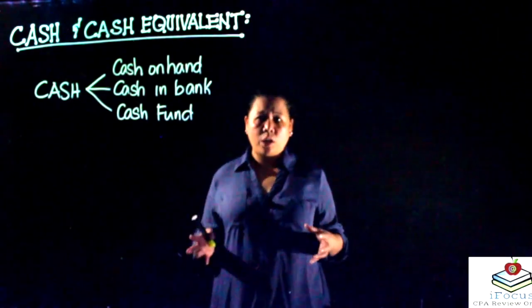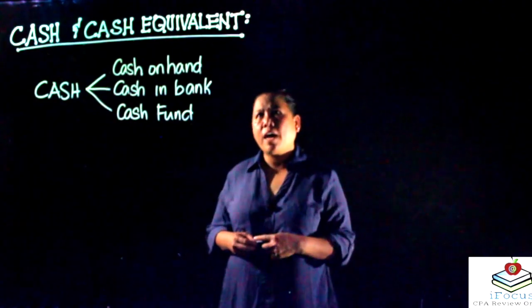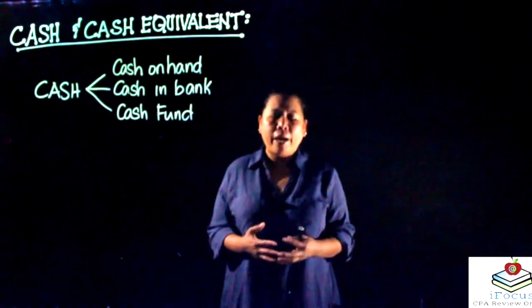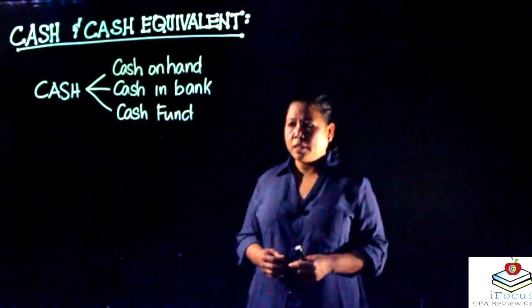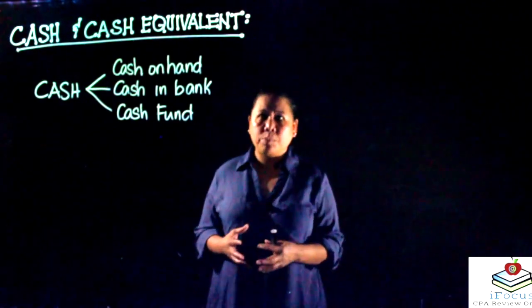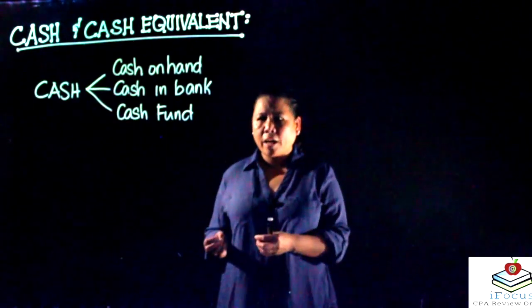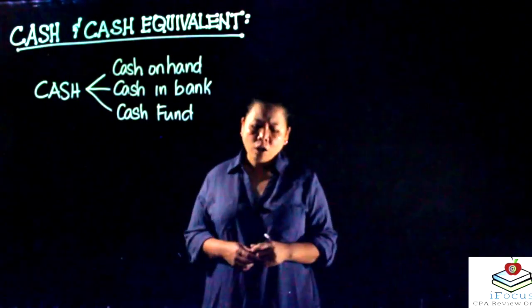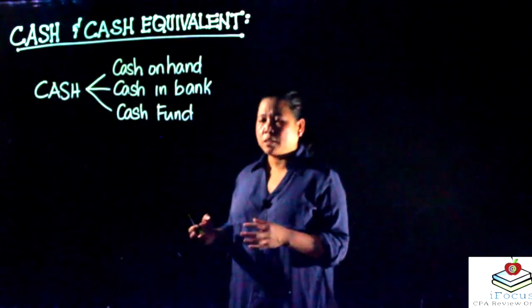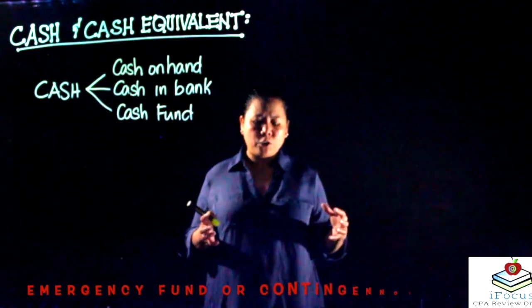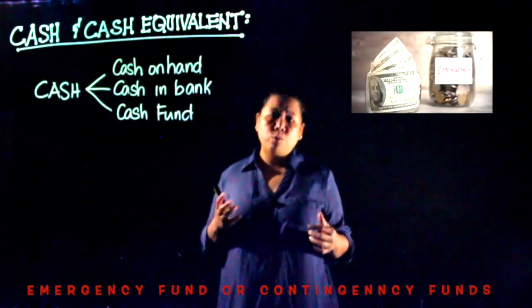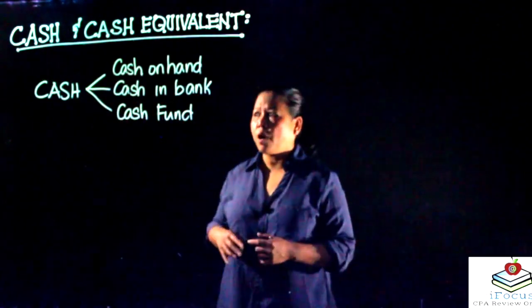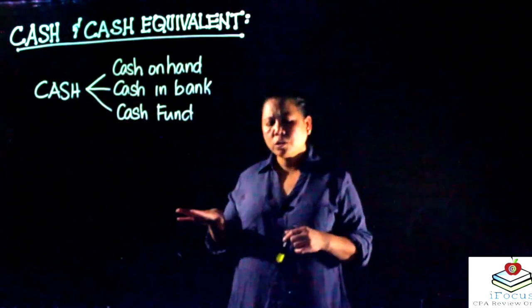Cash fund is a certain amount segregated for specific transactions of the company. For example, petty cash fund is a fund used to pay small expenses such as advances to employees and office expenses. Some companies also segregate amounts for emergency funds or contingency funds. These are the components of the account cash.